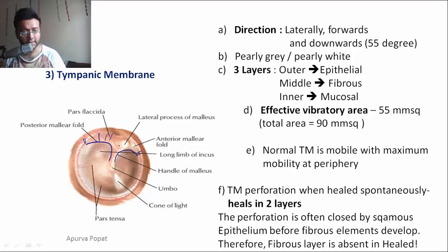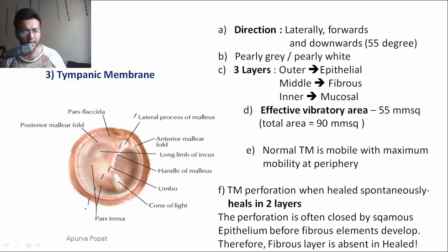The structure above the malleolar folds is the pars flaccida — the part of the tympanic membrane that is lax. The rest of the tympanic membrane is the pars tensa.